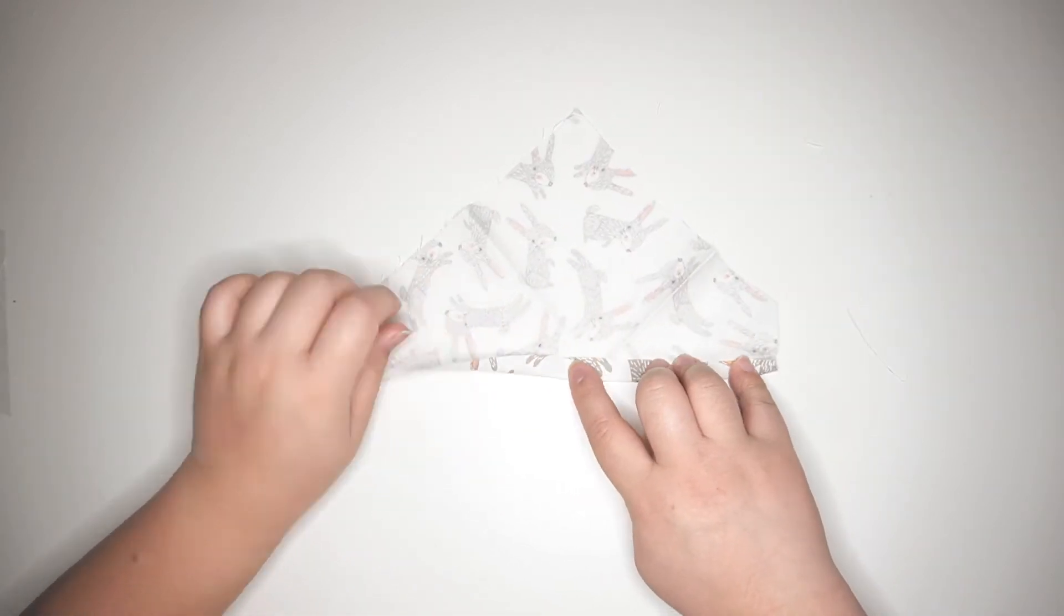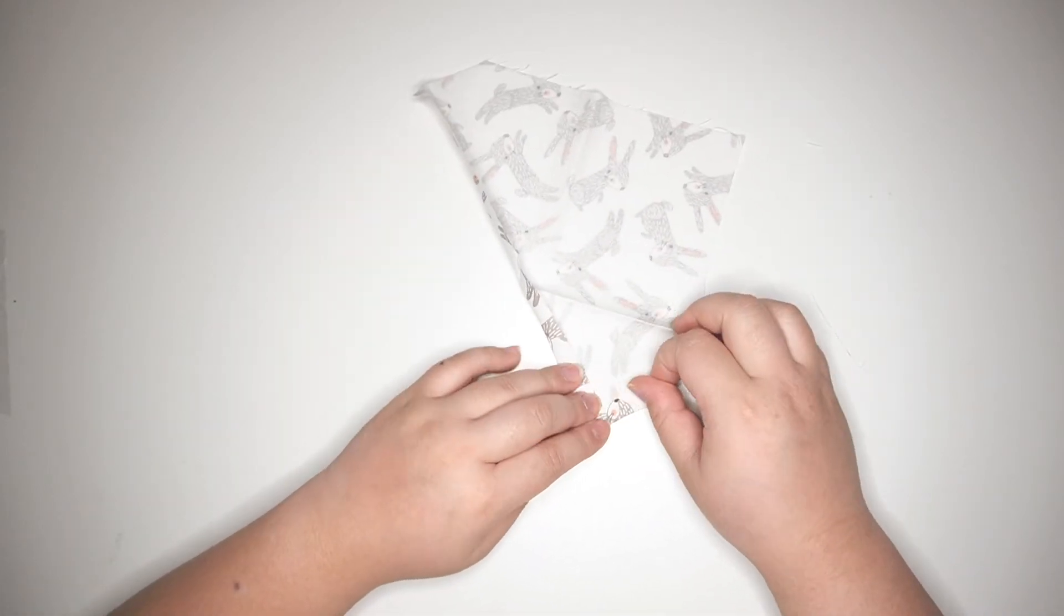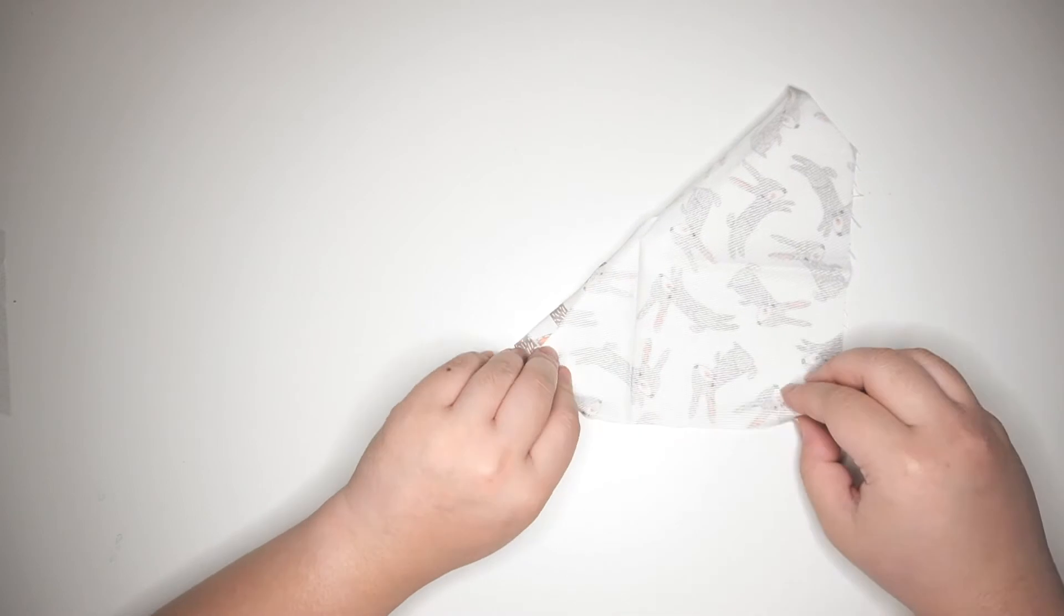Now that the fabric is cut out, I folded in about 1cm around the bandana and pinned the hem. Then I'm going to sew around this hem to create a nice straight edge.